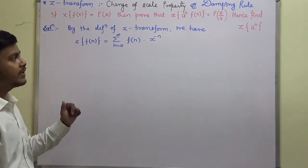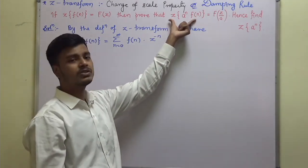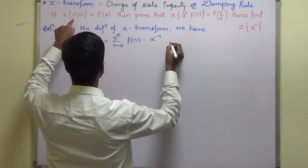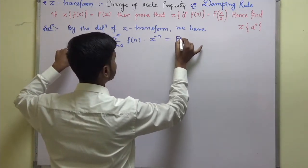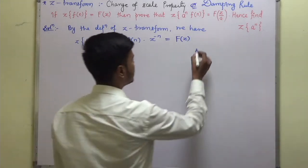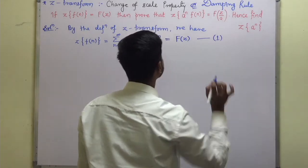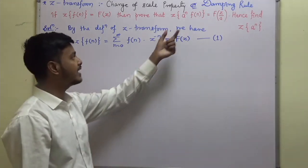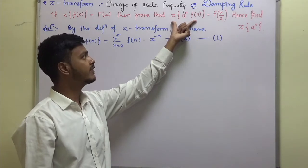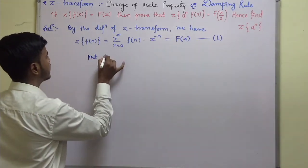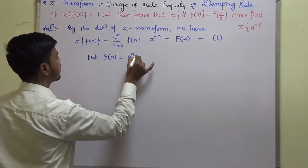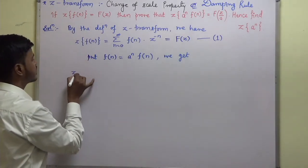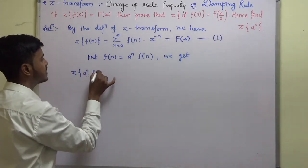Now what we want to prove is the Z-transform of a^n into f(n). So what I am going to do is take the Z-transform of a^n into f(n) — just substitute here, putting f(n) equal to a^n into f(n). We get the Z-transform of a^n into f(n).